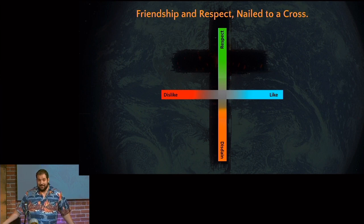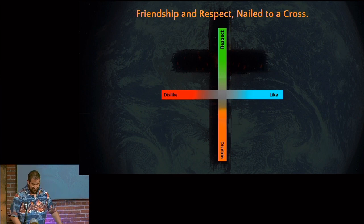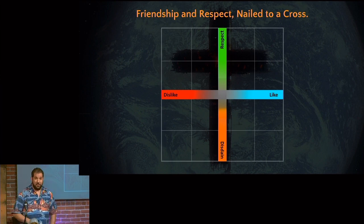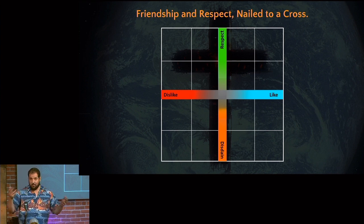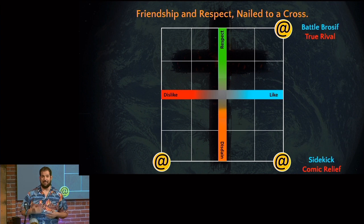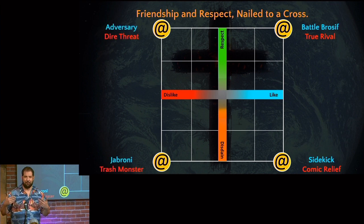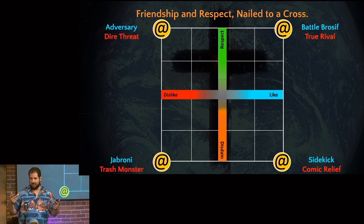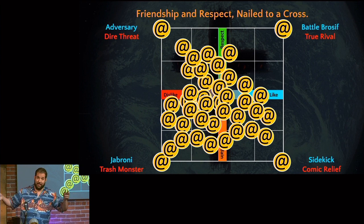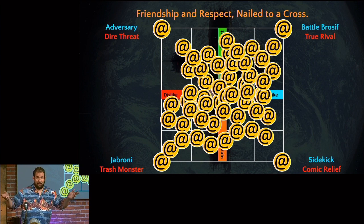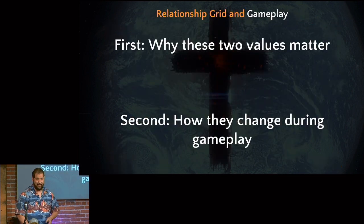So we nail them to a cross. Now we have a grid, and everybody likes grids — two exciting dimensions of reputation. Every one of those points could be something interesting. I think the compass points matter too.